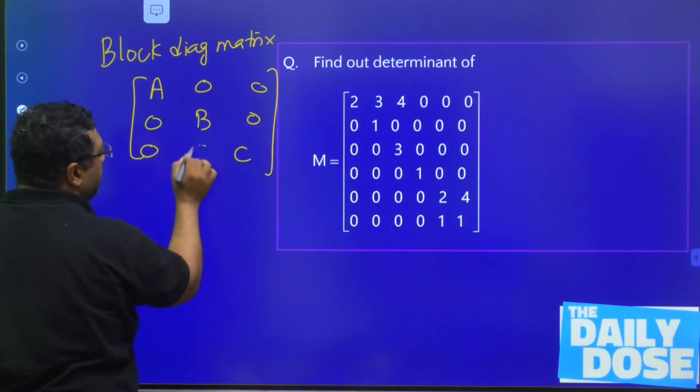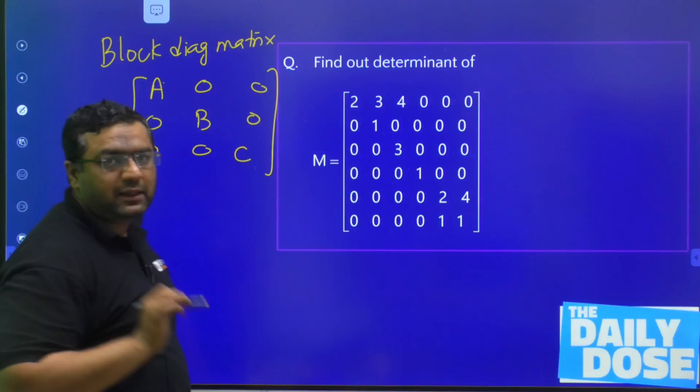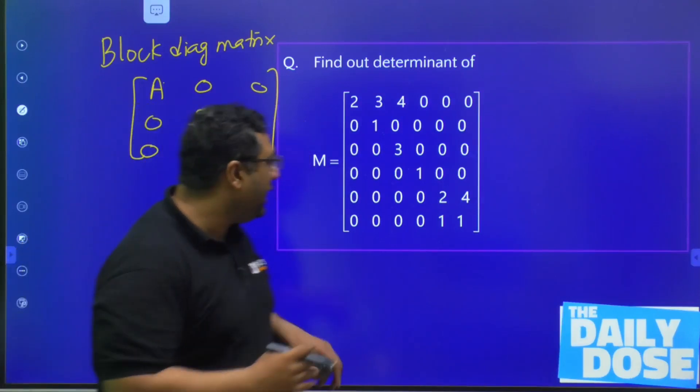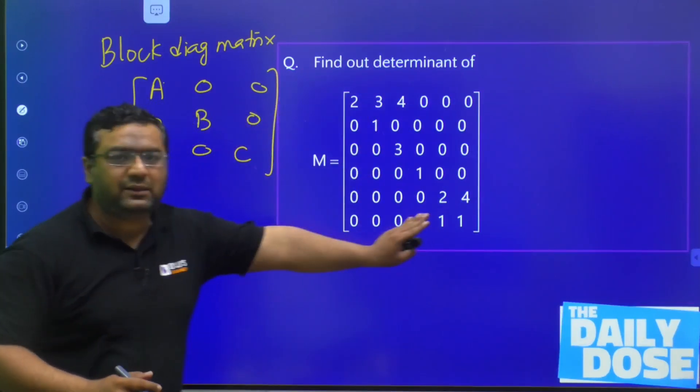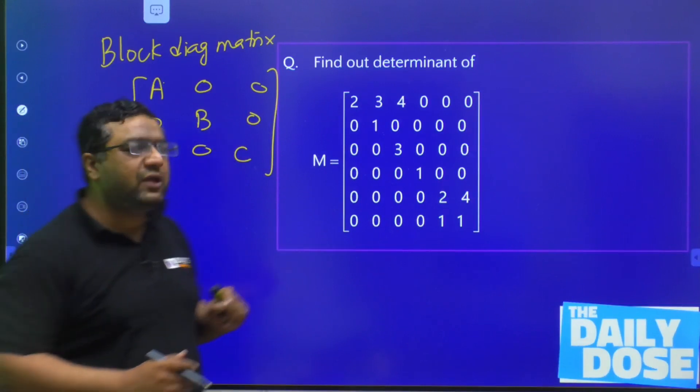What are these A, B, C? These A, B, and C are the matrices, and other than that, everything is 0. If you can convert any matrix into this format, then we can go for this shortcut.